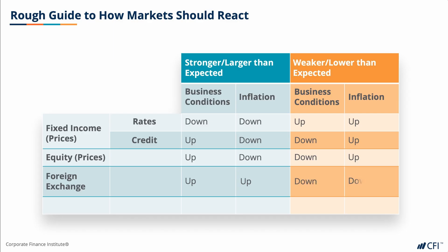Lastly, let's look at commodities. The prices of commodities are most positively correlated to the economic cycle. If the economy is stronger than expected, demand for commodities should be higher as well, as more will be consumed or used. The opposite is also true, in that weaker business conditions won't require as much raw materials or commodities. However, many commodities also have specific drivers of their price, whether it be geopolitics for crude oil, or weather for orange juice prices.